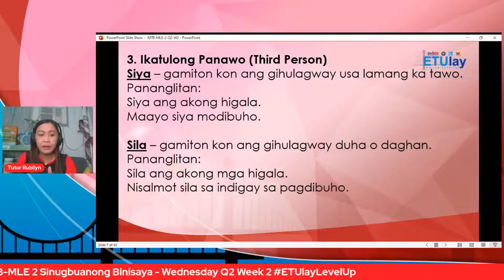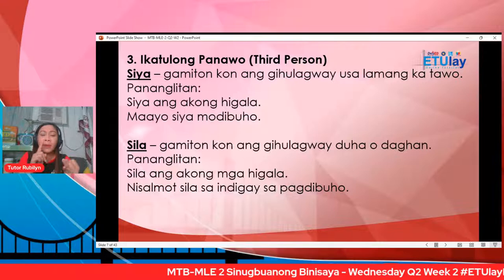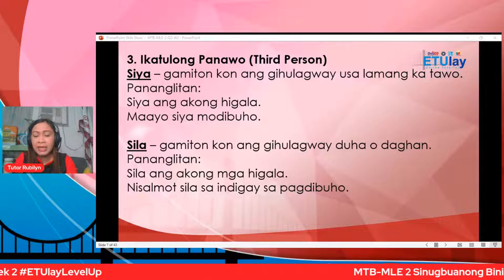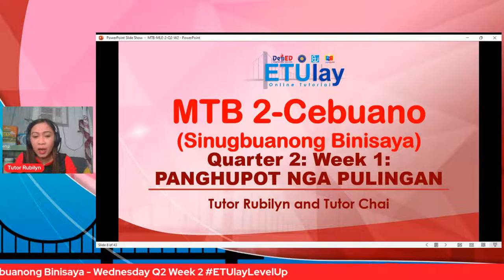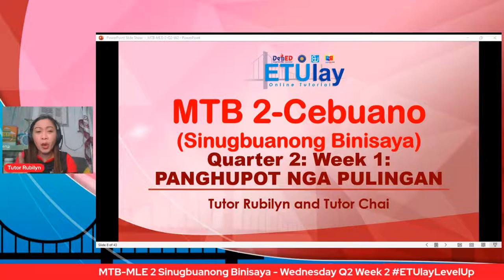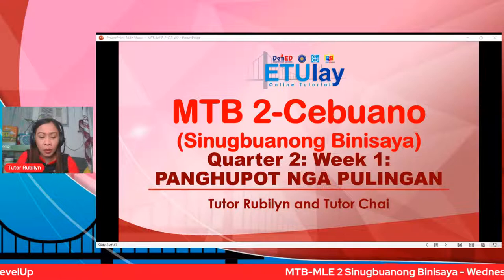Inana ang kalainan: natay unang panawo, natay ikaduhang panawo, natay ikatulong panawo. Karoon mga bata, nakahinumdum pa ba mo? Unsa ang mga pulong nga pwedeng gamiton sa unang panawo? Very good, Heavenly — ako kung usa, kami kung daghan. Duha ka pulong na sa unang panawo: ako, o kami. Sakto ang inyong tubag.